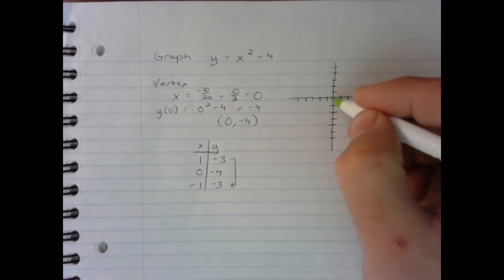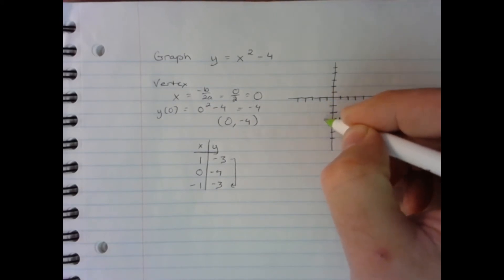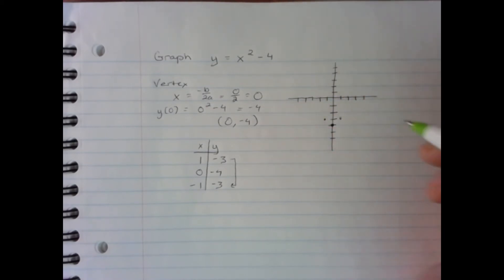So we'll go ahead and plot these points. 0, negative 4. Right 1, down 3. Left 1, down 1.